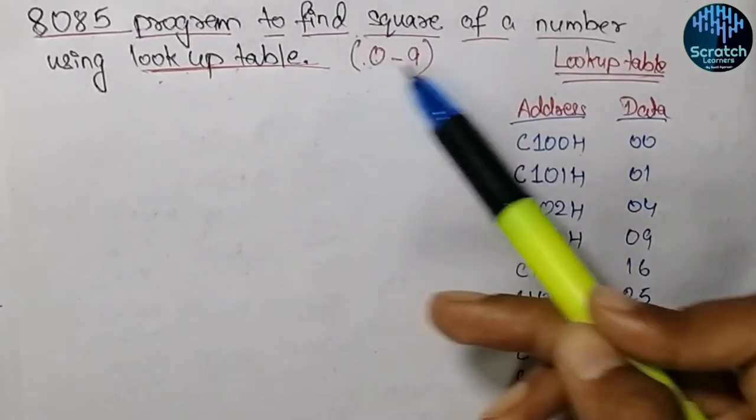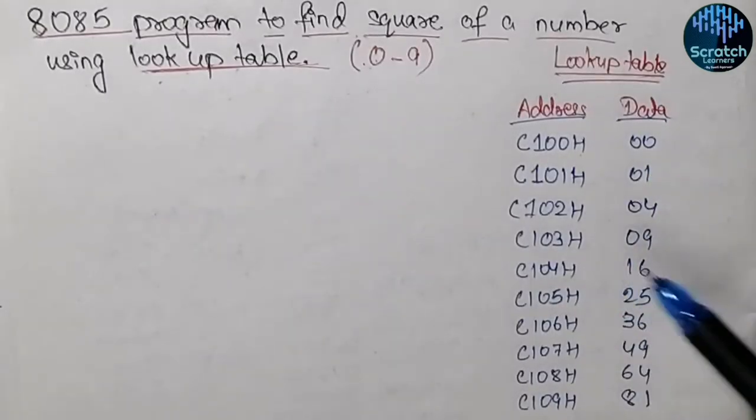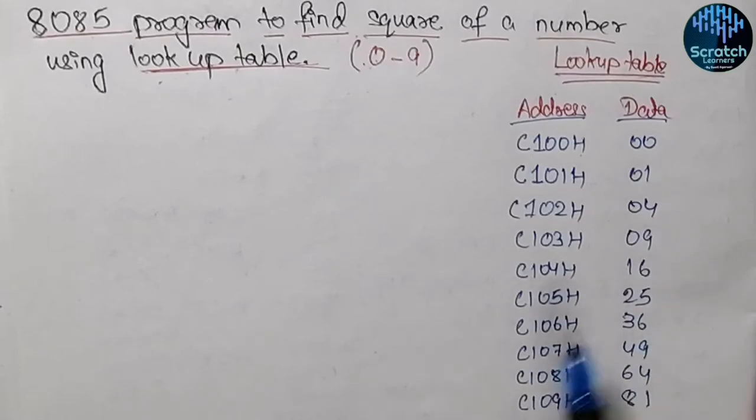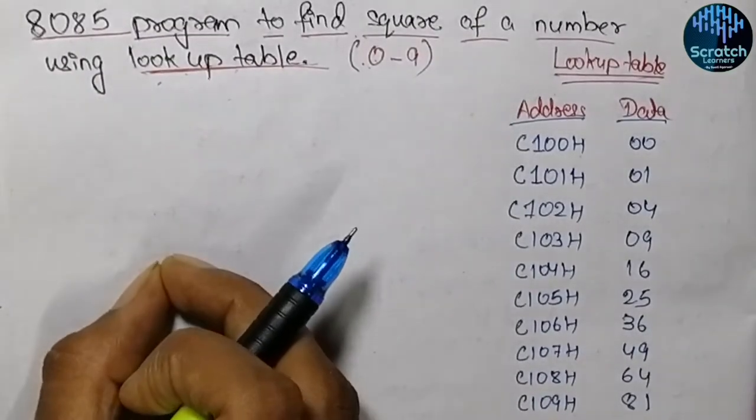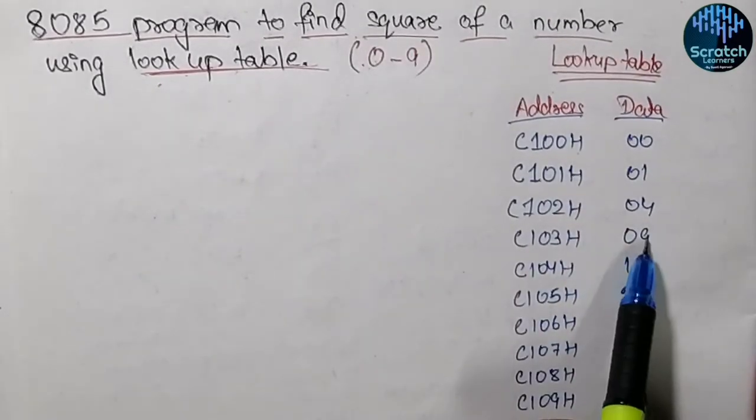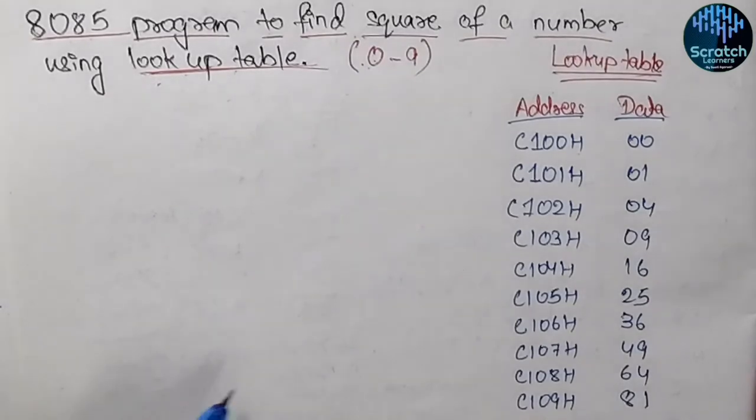I am storing the square values in decimal form, but you can also store them in hexadecimal form. Now we need to take the input, go to that location, fetch the data (the result), and store it in a memory location. That is the logic behind this program.